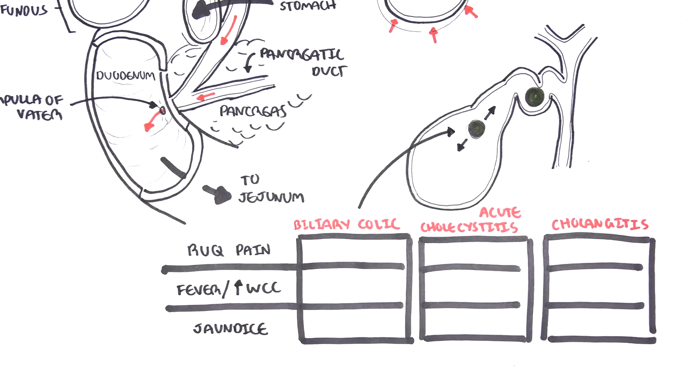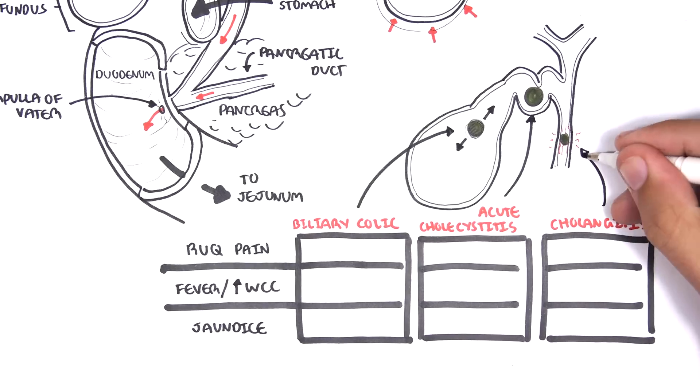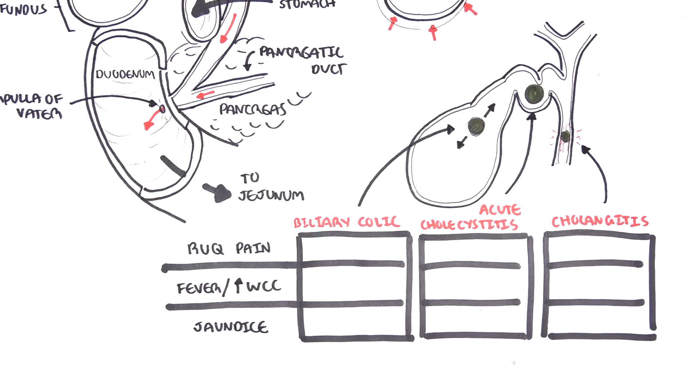Acute cholecystitis, as we mentioned, is the gallstone stuck at the cystic duct, causing inflammation of the gallbladder. And cholangitis is a complication of gallstones, where infection develops in the common bile duct, and this is life-threatening.